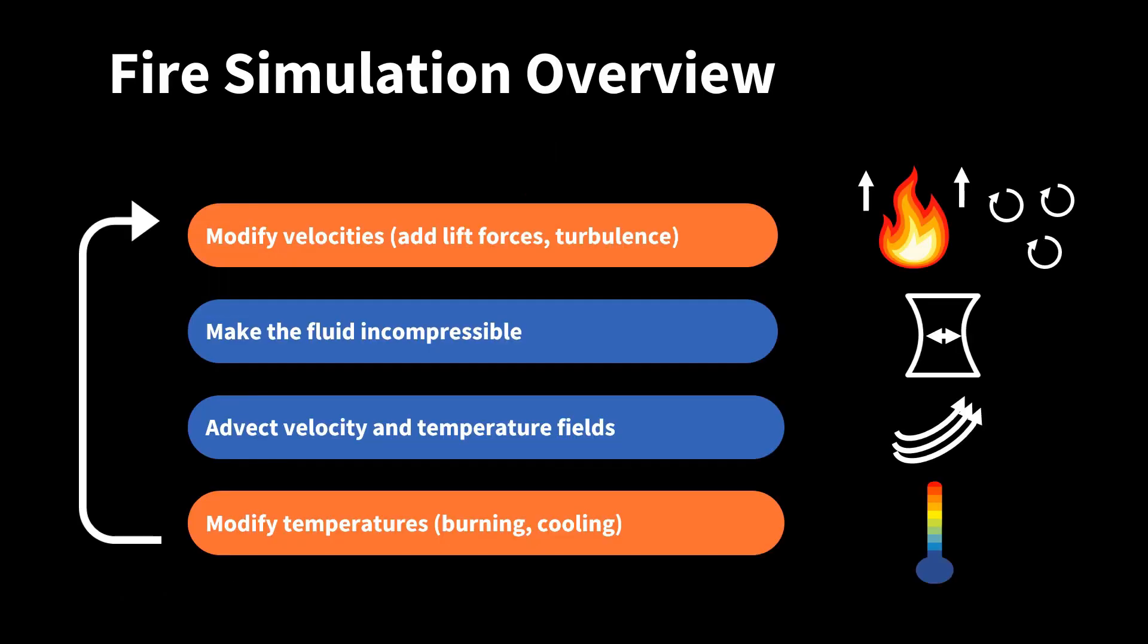Here is an overview of the fire simulation method. We modify the first step and add a fourth step. In the first step, we modify the velocity field as before. But this time, instead of gravity, we add lift forces and turbulence. In the second step, we make the velocity field incompressible as before. In the third step, we advect the velocity and temperature fields. So instead of having a smoke density field, we have a temperature field. In the fourth step, we modify the temperature field due to burning and cooling.